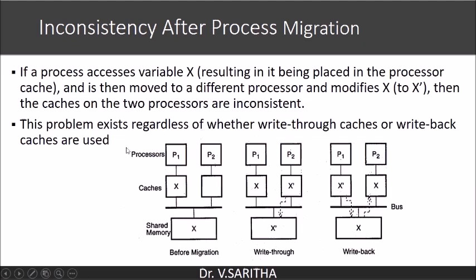There is a chance of inconsistency during process migration. P1 has data x in its local cache, which is the same as in shared memory — this is before migration. Now this process is migrated to P2. P2 updates its value to x', and if write-through cache is employed, shared memory is also updated. But P1 still has x — so inconsistency occurs. In the write-back case, if P1 updated its value to x' but did not update shared memory, then P2 reads the old value while executing the process, so the task goes wrong.